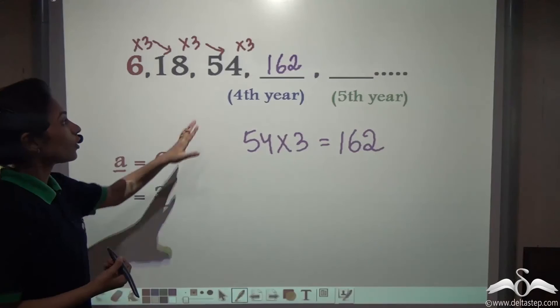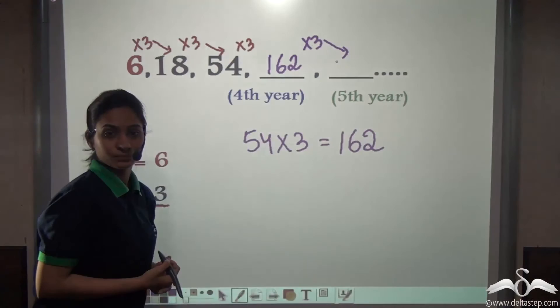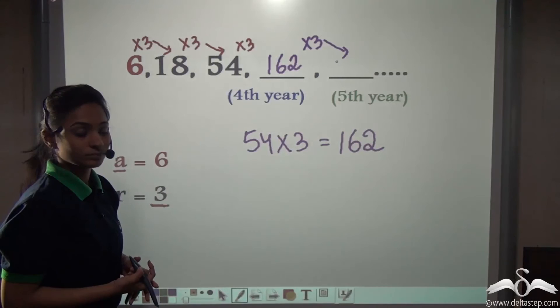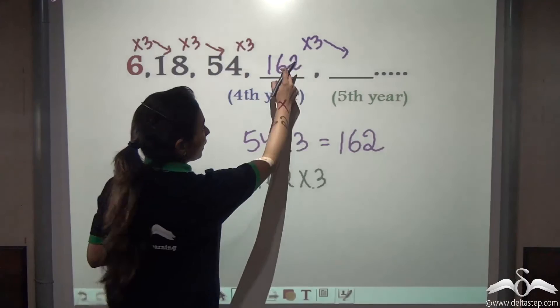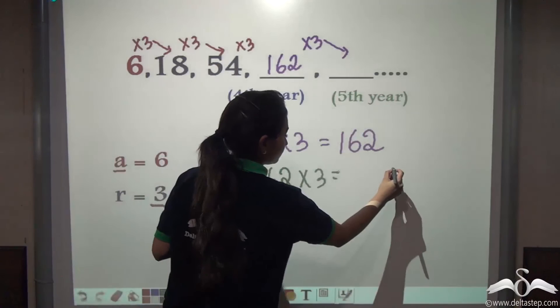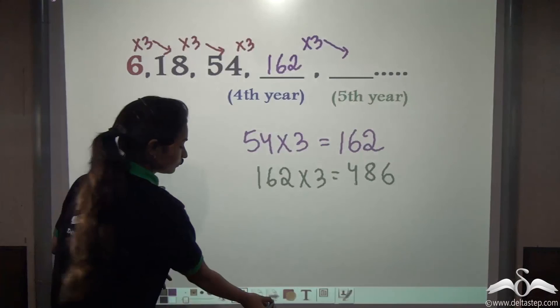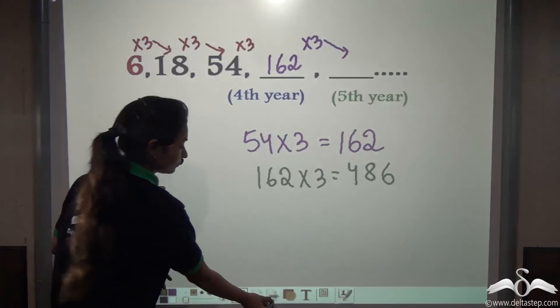Now again we know that multiplying into 3 here will give us the fifth term as well. So find out the number of seeds she had planted in the fifth year. Now we know that common ratio is constant in each term. So just multiplying 3 with 162 will give us the answer. What will you get? 486. See that means she planted 162 seeds in the fourth year and 486 seeds in the fifth year. And this will go on as she keeps on planting seeds in a GP series.